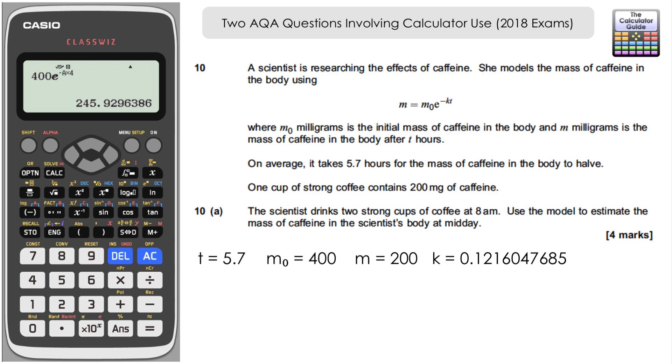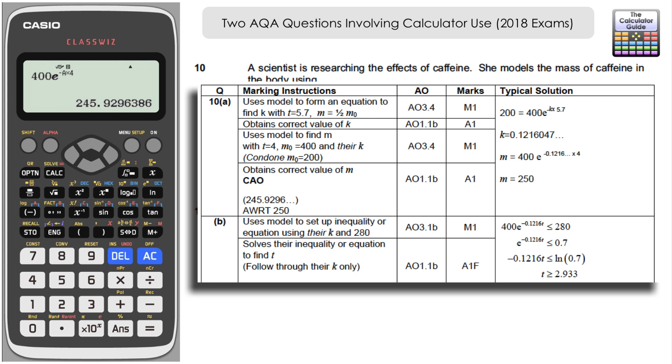Let's have a look at the mark scheme for this first part. You can see that provided that you're using the model that we set up in the calculator, it's well worth writing down what we're going to put into the calculator. You're going to get the marks. You get a mark for obtaining the correct value of k. So there's no marks for doing any rearrangement and introducing logarithms or anything like that. You can let the calculator solve it in this case. Then the second mark, we've got a method mark for inputting those figures into the calculation. Essentially write down what we're inputting into the calculator and let the examiner know clearly. Once again if we get the correct answer we don't need to show that we're solving it. 245.9296, anything which rounds to 250 will get the mark. M equals 250 at midday.